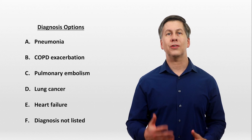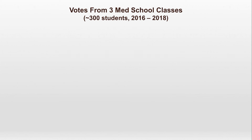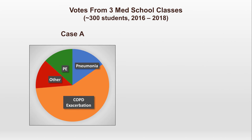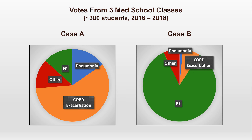Here are the results tabulated from three successive years, 2016 to 2018. The majority of students given case A select a COPD exacerbation, with a minority choosing PE or pneumonia. And among those students given case B, the overwhelming majority chose PE. This was a consistent finding, and each year had the same phenomenon happen. But I said that the two cases contained the same information — so why did this happen?